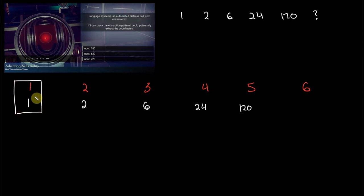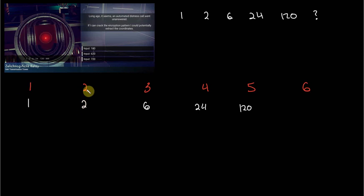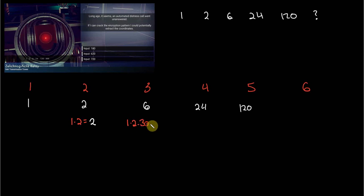But in order to find the answer this way, you would have to basically bracket and put aside the first term. It turns out that the second term equals 2, which certainly is 1 times 2. And the third term is 6 — you could think of it as 3 times 2 times 1, or 1 times 2 times 3, and you're going to get 6.